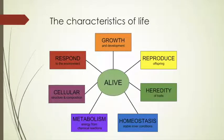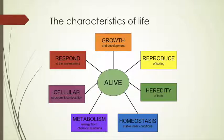After the scientific method — and this is a biology course — it's only logical that we discuss the characteristics of life. There are seven main characteristics that living organisms must have in order to be considered alive: growth, reproduction, heredity, homeostasis, metabolism, cellular structure and composition, and the ability to respond to the environment. Let's explain each one of them in a little bit more detail.